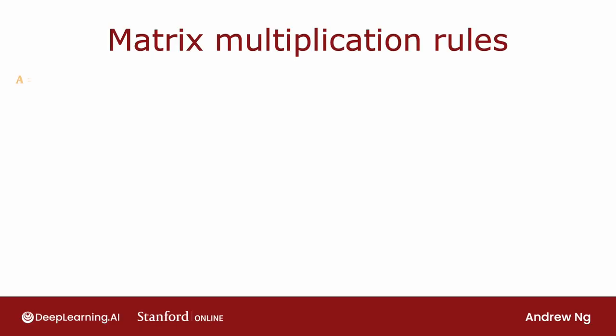Here's a matrix A, which is a 2 by 3 matrix, because it has two rows and three columns. I encourage you to think of the columns of this matrix as three vectors: A1, A2, and A3.